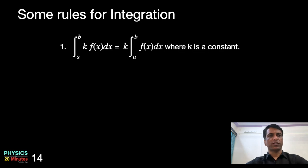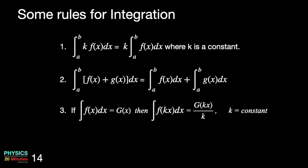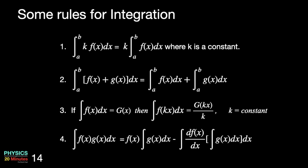Let us look at some of the rules for integration. The integration of a constant multiplied by a function equals the constant times the integration of the function. Integration is distributive, so the integral of f(x) + g(x) gives the integral of f(x) plus the integral of g(x). There is also the rule for integration by parts: the integral of u·v dx = u·∫v dx − ∫(du/dx · ∫v dx) dx. This last rule is normally referred to as integration by parts.